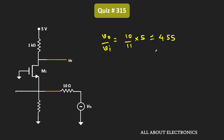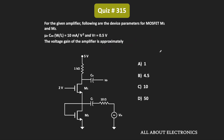The voltage gain of this common gate amplifier is equal to 4.55. Therefore, for the given question, option B is the correct answer.